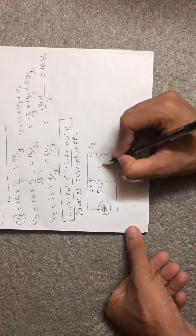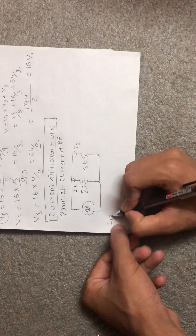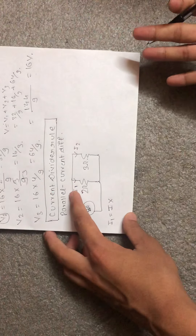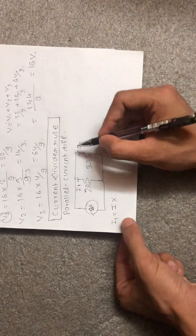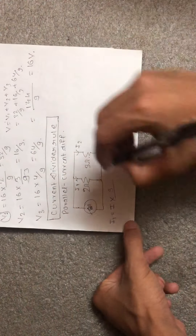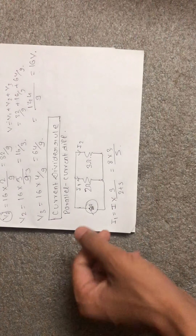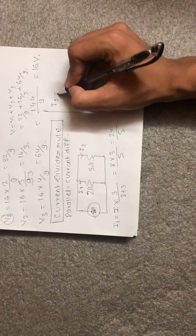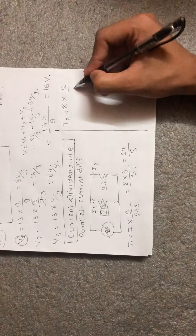We have a 2 ohm resistance and a 3 ohm resistance in parallel. Using the current divider rule: I1 equals total current multiplied by the opposite resistance over total resistance. So I1 = 8 × 3/(2+3) = 8 × 3/5 = 24/5. Similarly, I2 = 8 × 2/(2+3) = 8 × 2/5 = 16/5.